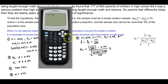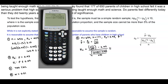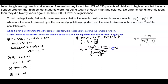Let's see what that gives us in the calculator. We compute 177 divided by 650, minus 0.45, then divide that by the square root of 0.45 times 1 minus 0.45, all divided by 650. We get approximately negative 9.106, which rounded to two decimal places gives us negative 9.11.